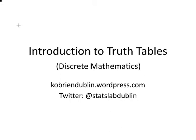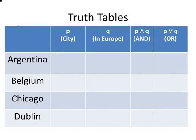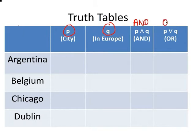In this presentation we're going to look at an introduction to truth tables as part of the Discrete Mathematics series. I have two propositions, P and Q. P is that the place in question is a city. Q is the proposition that the place is in Europe. I also have the logical conditions AND and OR — the two most common logical operations. The symbols are this little wedge symbol for AND and this little V symbol for OR. It's important to know which is which, although some books use the words AND and OR rather than the symbols.